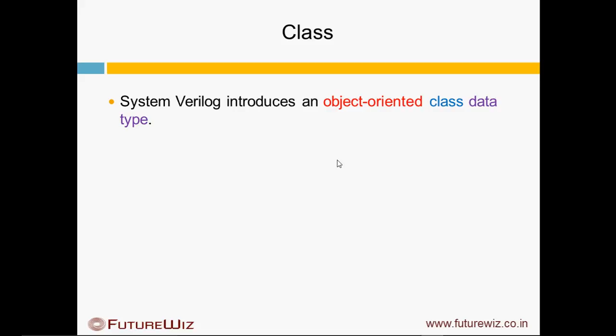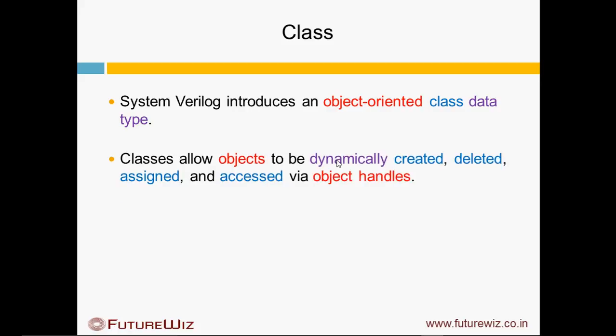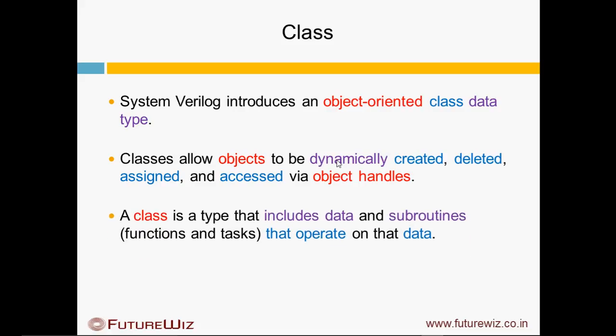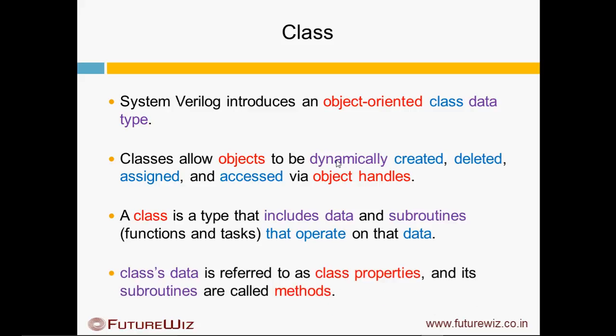System Verilog introduces the concept of Object Oriented Programming. It offers something called Classes. Classes allow us to create objects dynamically, which can be accessed with the help of object handlers. A Class is a type that includes data and the subroutines that operate on that data. Class data is also referred to as class property, and subroutines are also called methods.